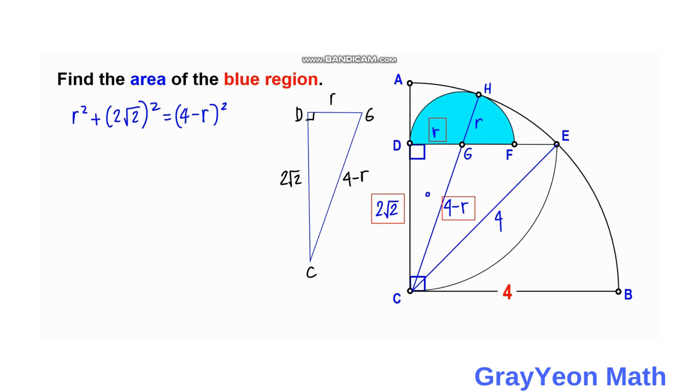Next we consider this equation with Pythagorean theorem. So r squared plus 2 square root of 2 squared is equal to 4 minus r squared. We copy this r squared, and this becomes 4, and if you square this square root of 2, that is 2, so this becomes 8. This is equal to we expand this binomial, so this becomes 4 squared, that becomes 16, minus 2 times 4 is 8, so minus 8r plus r squared.